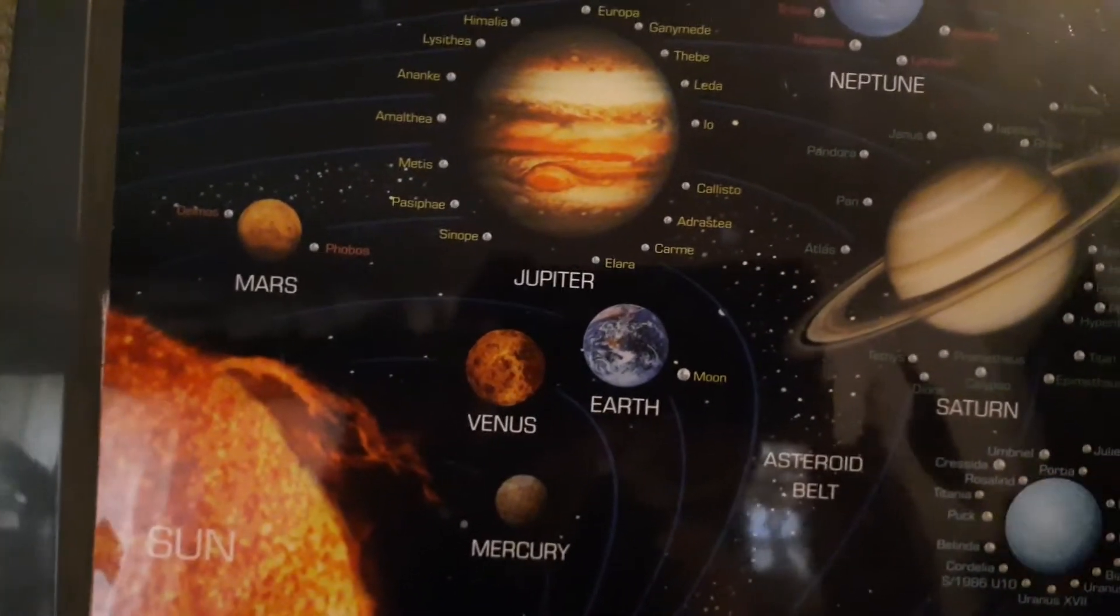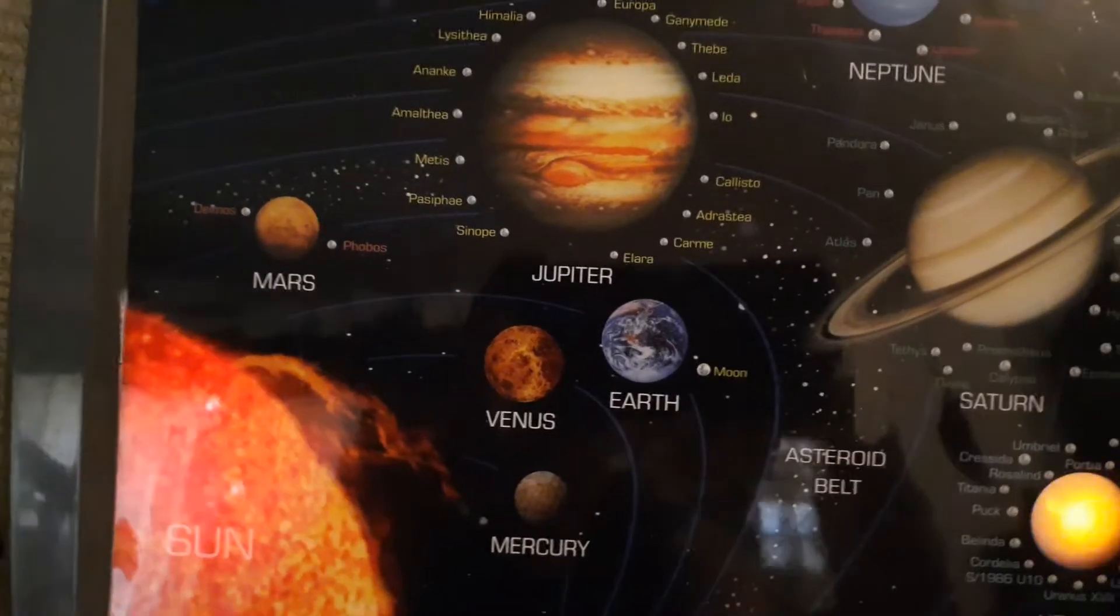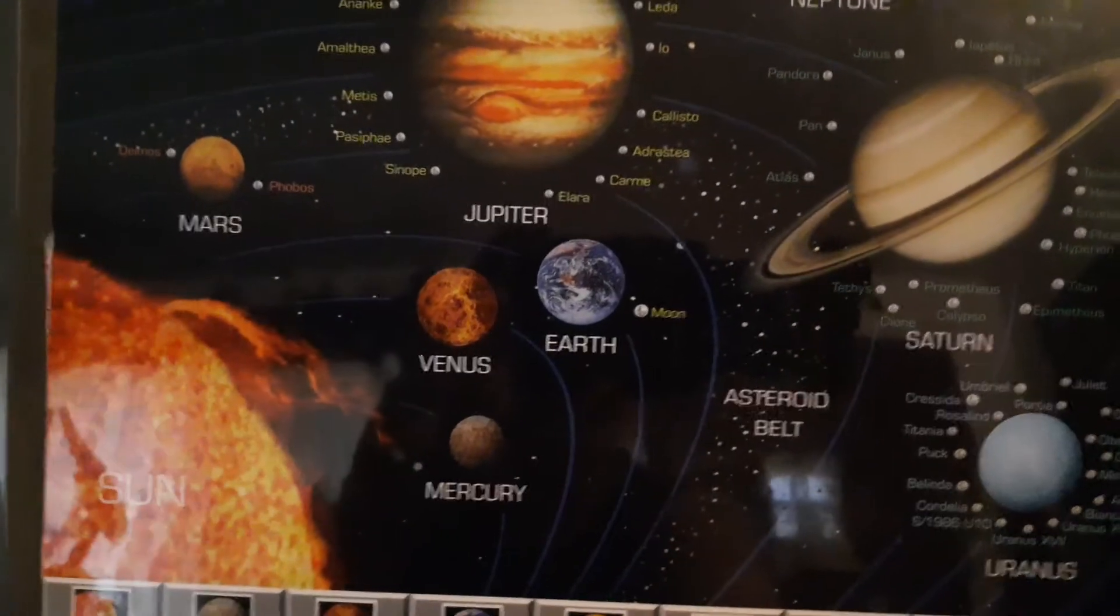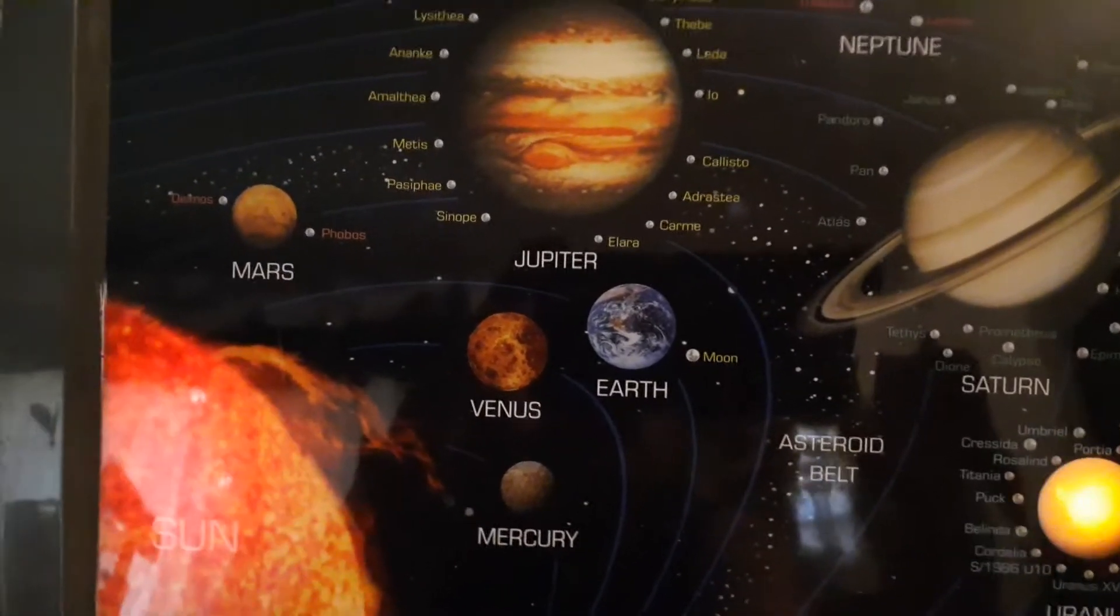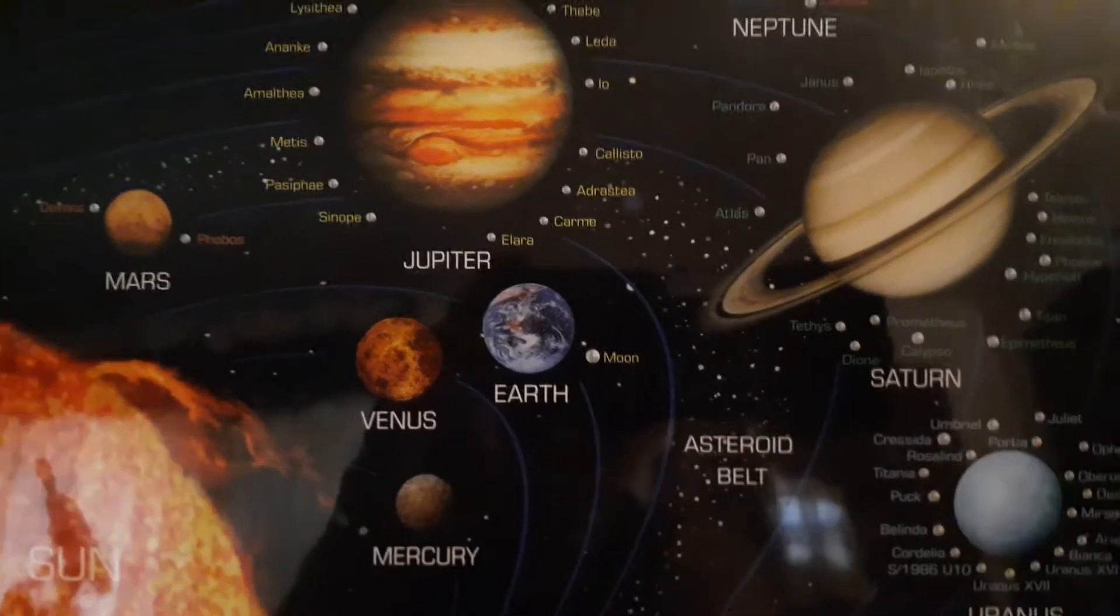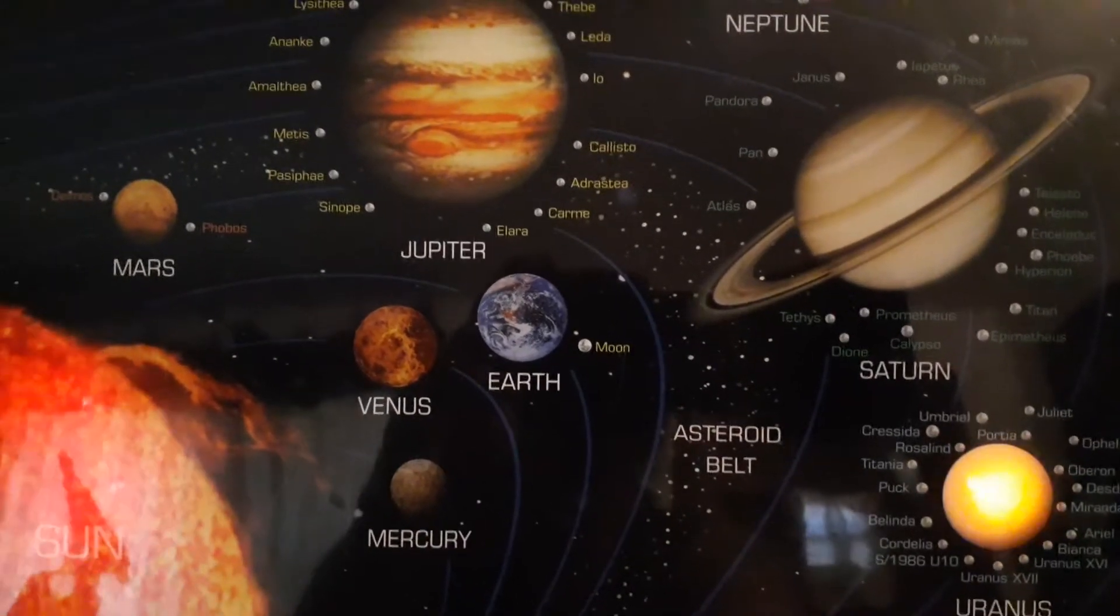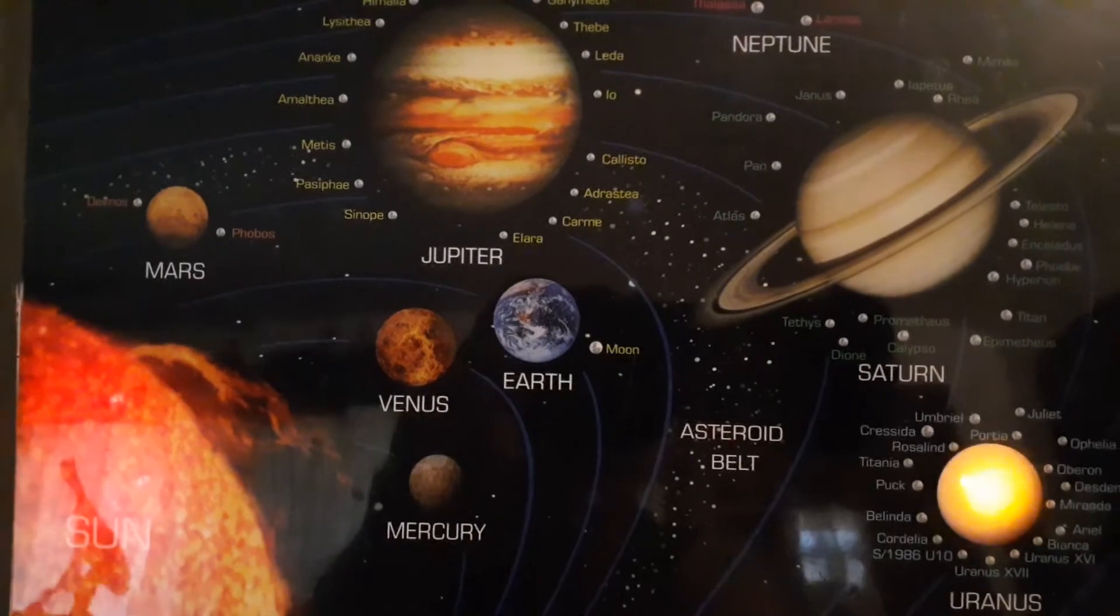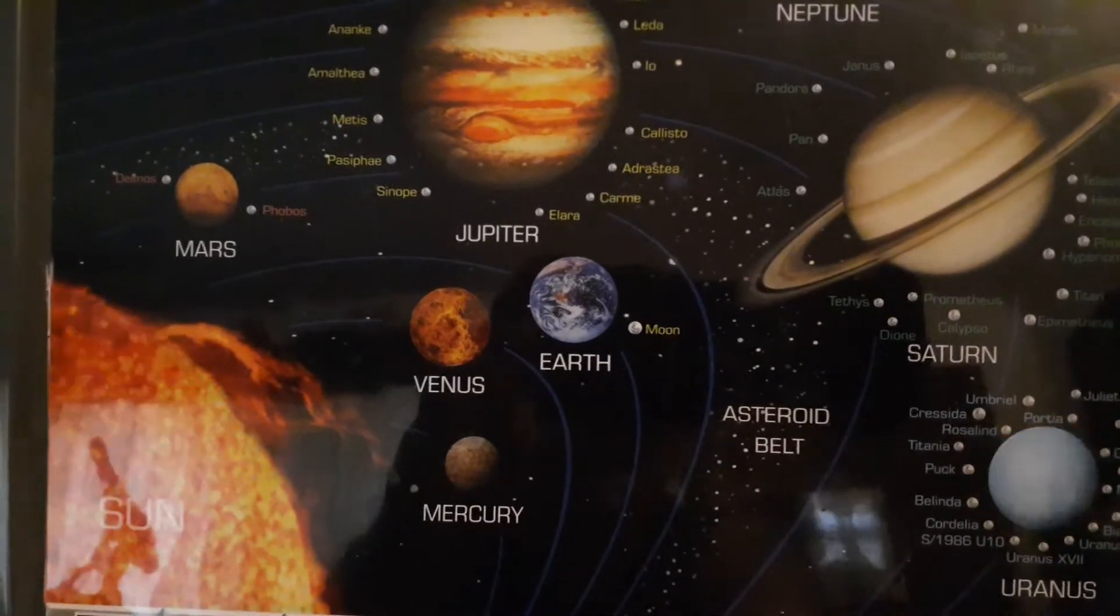And the distance from the sun? Uranus is 1,783,000,000 miles from the sun. Or if you travel at 100 miles per hour, 24 hours a day, it would take 2,035 years.